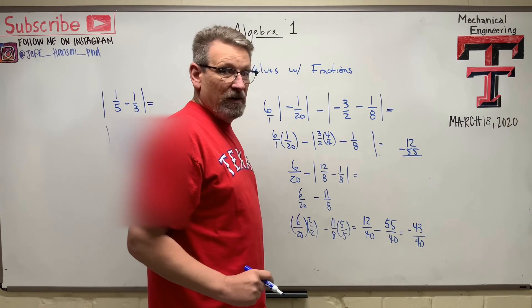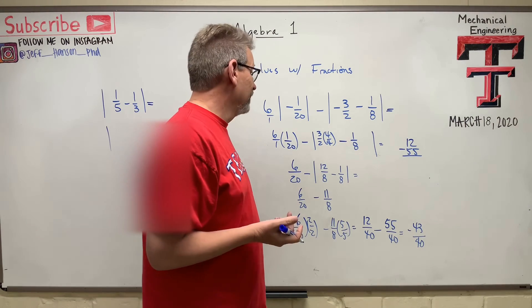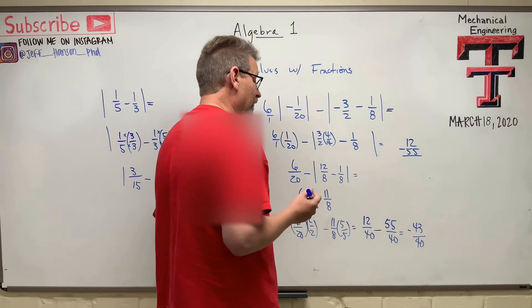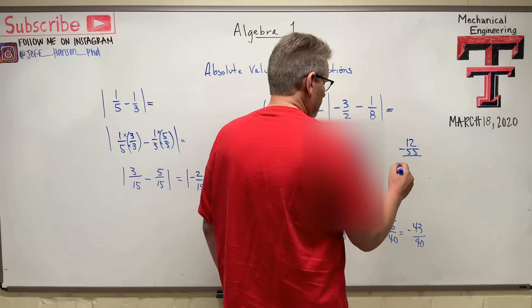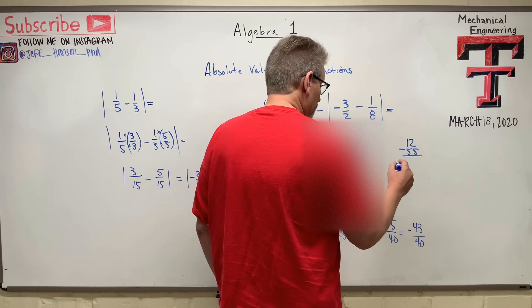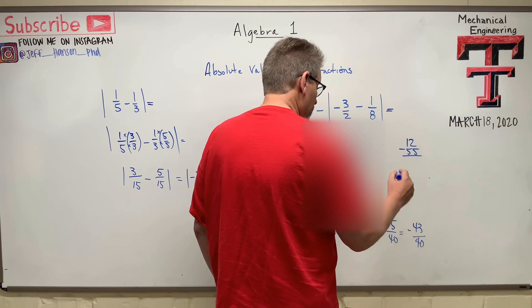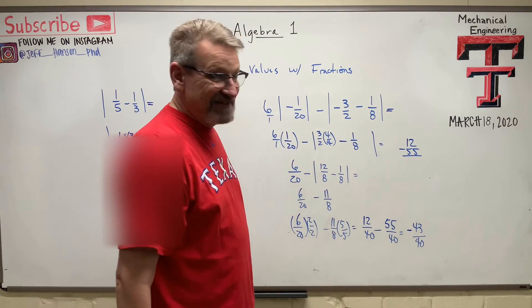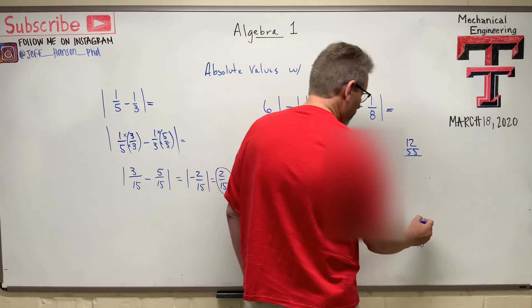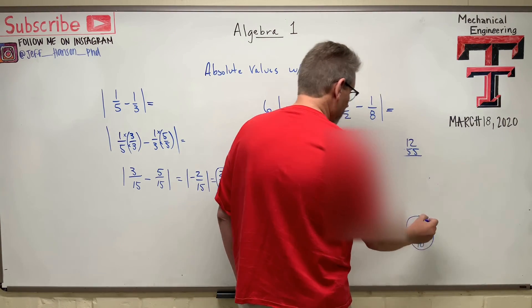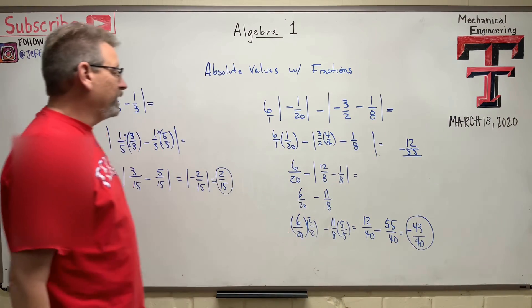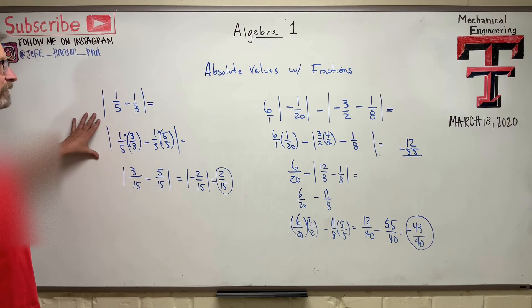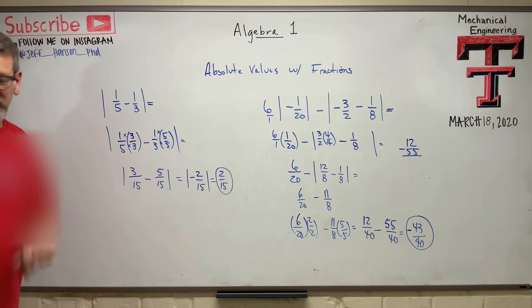And you've been doing it as long as me, you can just do them in your head. Hopefully you're getting good at this and you start getting to do these in your head. Let's see. So does that reduce? Negative 43 over 40? I don't think that reduces. 43 is a prime number, so that's as small as that guy's going to get. And so there it is. So fractions, absolute values. You got it? All right, I'll see you next time. Thank you.